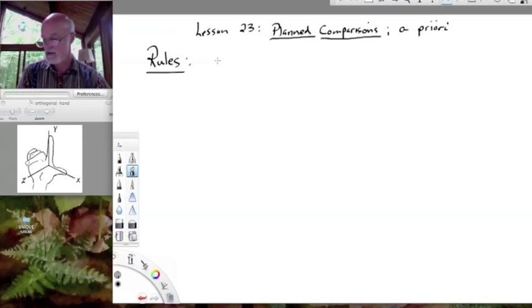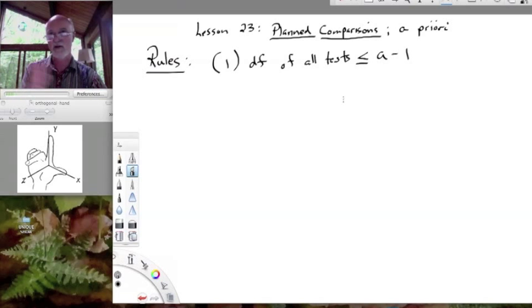So we need to understand the rules for making planned comparisons in order to carry them out. Rule number one, very simple: degrees of freedom of all the tests—in other words, we add up all the degrees of freedom of all the tests we want to make—has to be less than or equal to A minus 1. For example, if we have five different groups, we could make five times four divided by two, ten different tests.